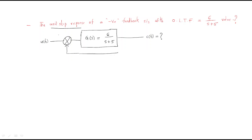We are giving negative feedback to the system. We need to find C(t). The input r(t) = u(t), so in the s-domain we can write R(s) = 1/s.